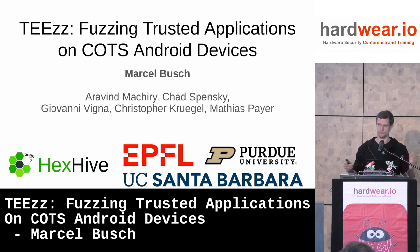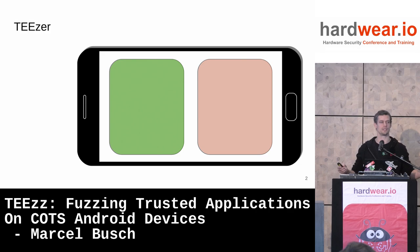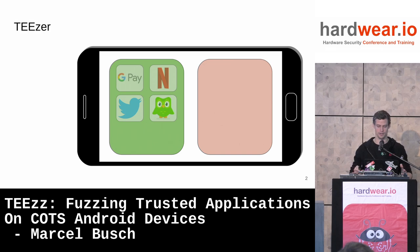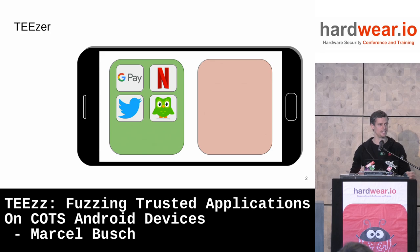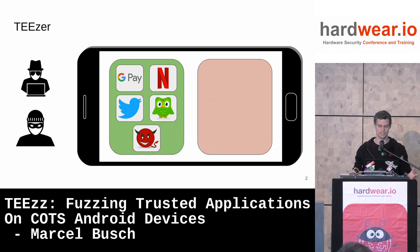Before we dive into the actual system we built to fuzz, let me give you a little teaser. Our phones have become ecosystems where a bunch of stakeholders deploy their software stacks. A couple of them rely on their assets being protected. These systems are exposed to threats like a malicious app being installed, your device being stolen, or your basement being hacked from the outside.